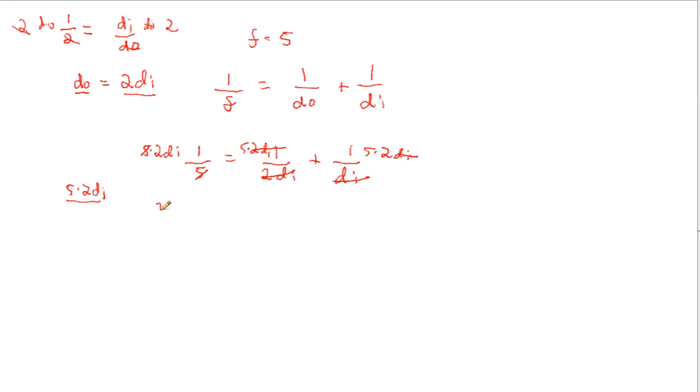We end up getting 2di is equal to 5 plus, well, 5 times 2 is 10. And that gives us 2di is equal to 15. Now in order to solve for di, we divide both sides by 2. And the distance of the image is equal to 15 over 2.